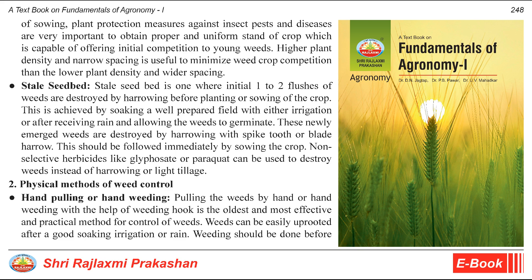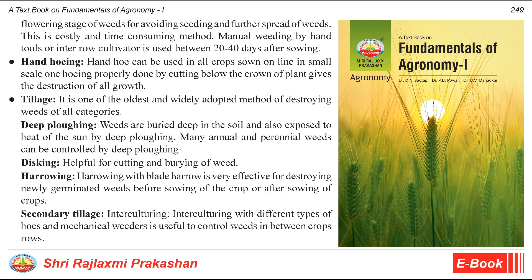Physical Methods of Weed Control. Hand pulling or hand weeding: pulling weeds by hand or using a weeding hook is the oldest, most effective, and practical method for control of weeds. Weeds can be easily uprooted after good soaking, irrigation, or rain. Weeding should be done before the flowering stage of weeds to avoid seeding and further spread. This is a costly and time-consuming method; manual weeding by hand tools or inter-row cultivator is used between 20 to 40 days after sowing. Hand hoe: a hand hoe can be used in all crops sown in lines on a small scale; one hoeing properly done by cutting below the crown gives destruction of all growth.